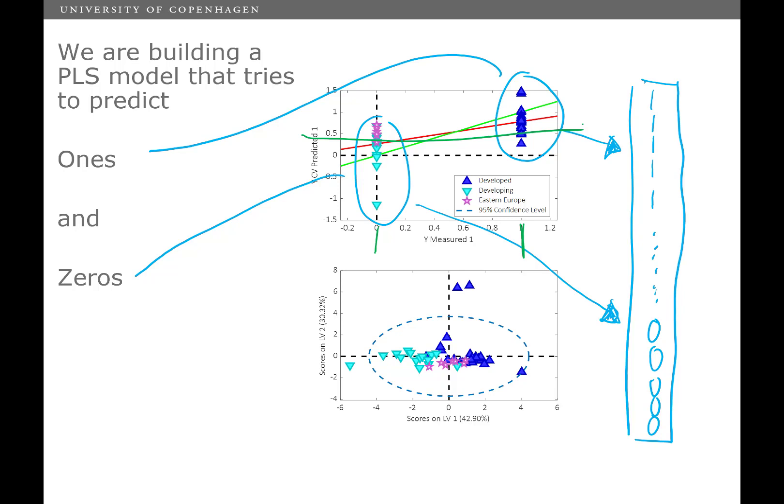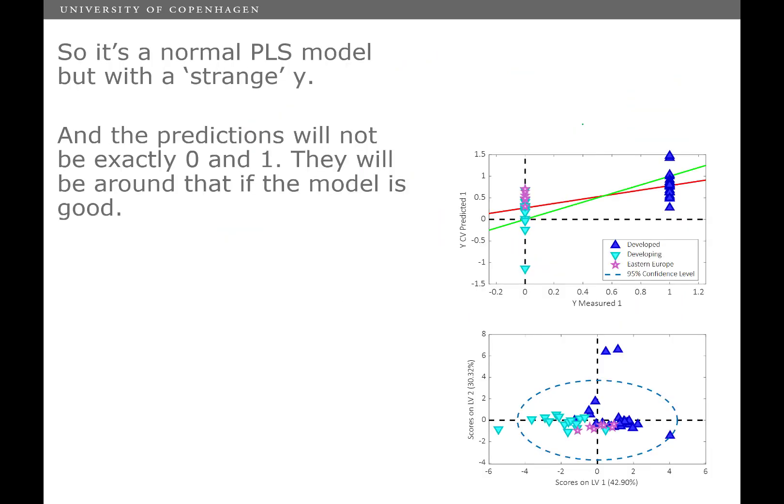So probably this developed country is, after all, not that very developed because it gets a very low prediction. And likewise here on the non-developed countries, we see that we get a number of different predictions ranging from even minus one up to 0.7 or something like that. So it's a little bit difficult to get a perfect classification here because no matter what threshold I'm going to choose, I will run into some kind of problems. So we have to decide where the threshold is and how do we do that?